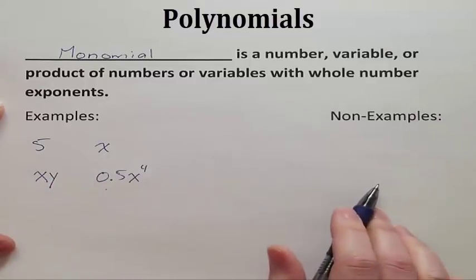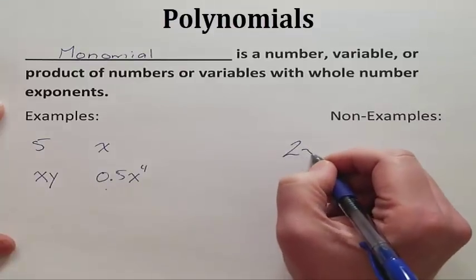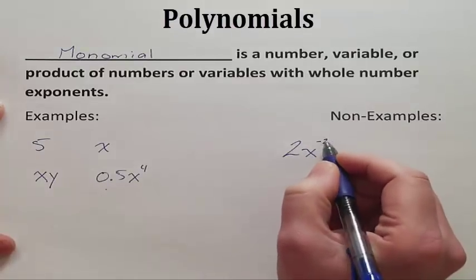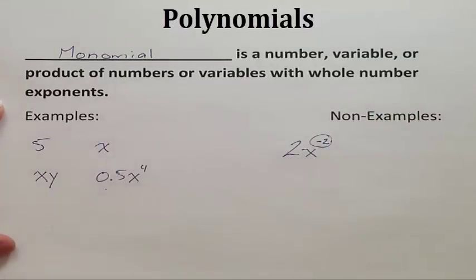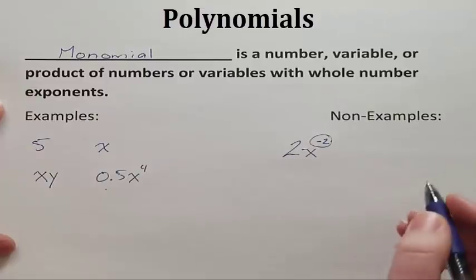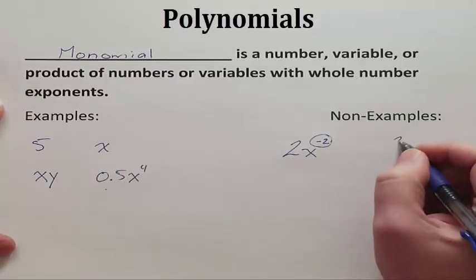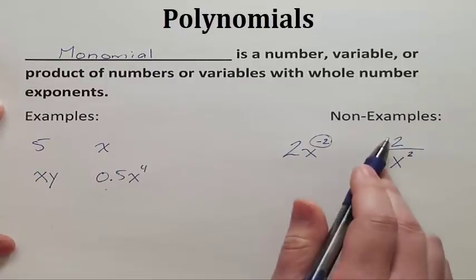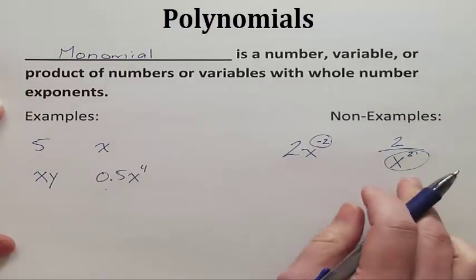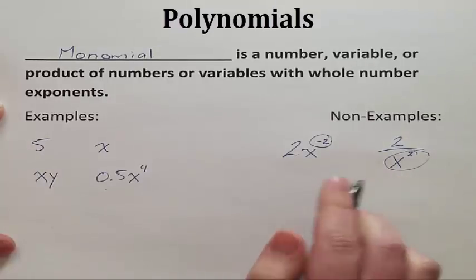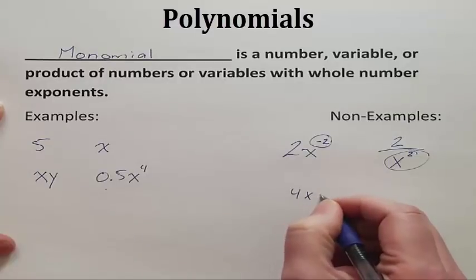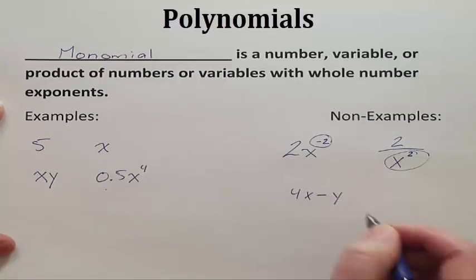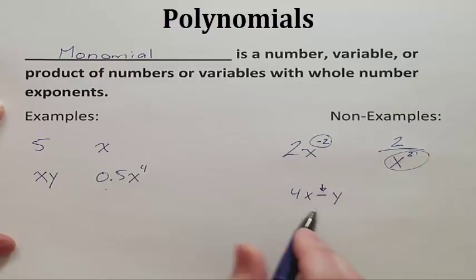Now what's a non-example? If I have a variable to a negative exponent, that is not a whole number exponent, so it is not an example of a monomial. If I have a fraction with the variable on the bottom, this is not a monomial — these are actually the same thing. If I have 4x minus y, because of the subtraction, this is not a monomial.